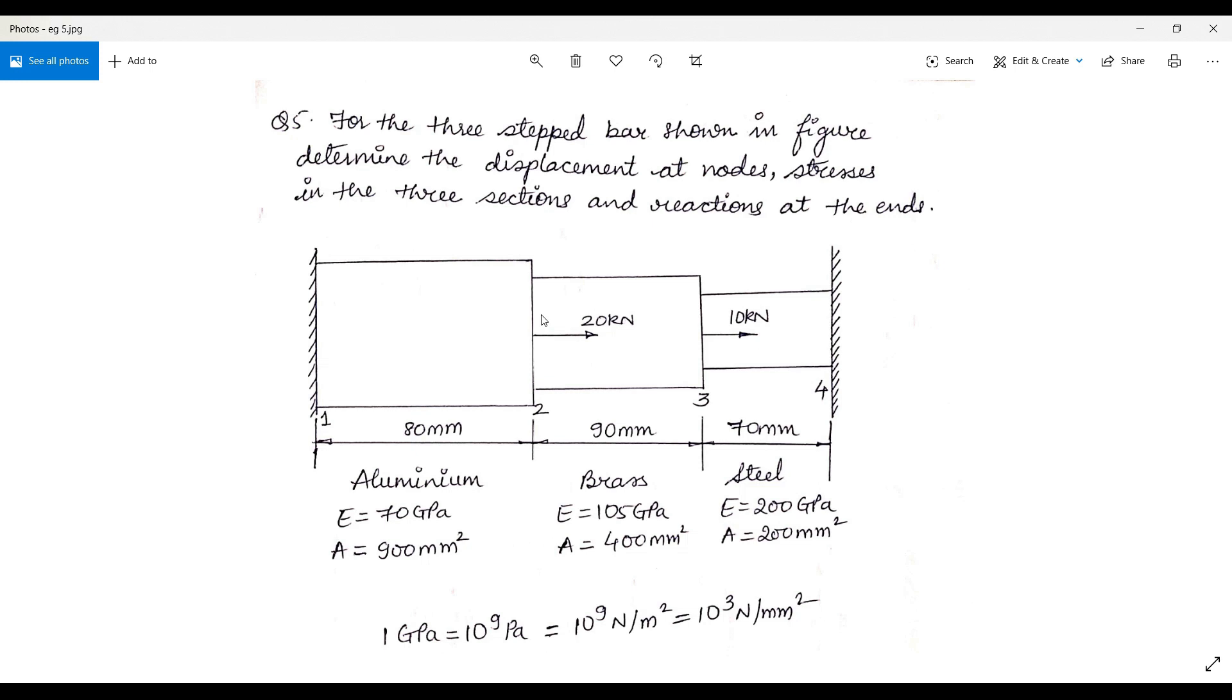Here at this junction, at node 2, there is a change in geometry, change in material and a sudden load coming into picture. You don't have to mark three nodes, just mark one node for it. But for all these conditions which I have said, a node is generally marked.